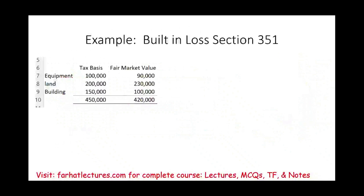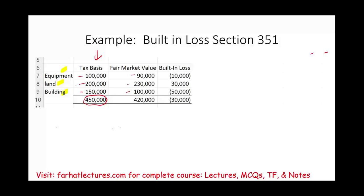Let's look at an example. Assume Adam contributed equipment, land, and building with tax bases of 100, 200, and 150 — a total basis of 450. Fair market values are: equipment 90, land 230, building 100. Computing gain or loss: equipment has a 10,000 loss, land has a 30,000 gain, building has a 50,000 loss. Netting them together gives an aggregate loss of 30,000. The total losses are 60,000 (10 + 50) across equipment and building, but the net aggregate loss is 30,000. We must allocate this 30,000 to the equipment and the building, reducing their basis on the corporate books.